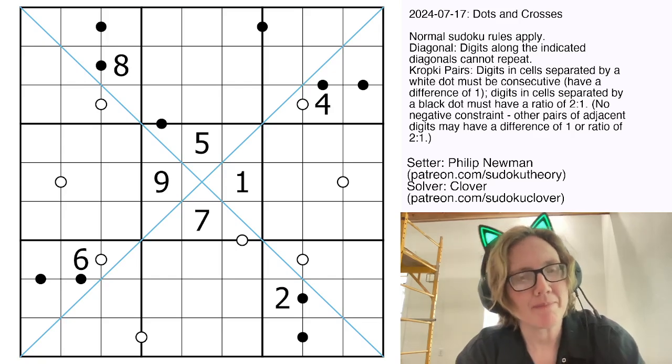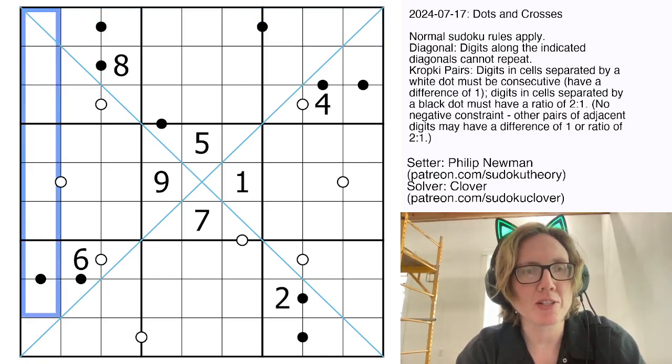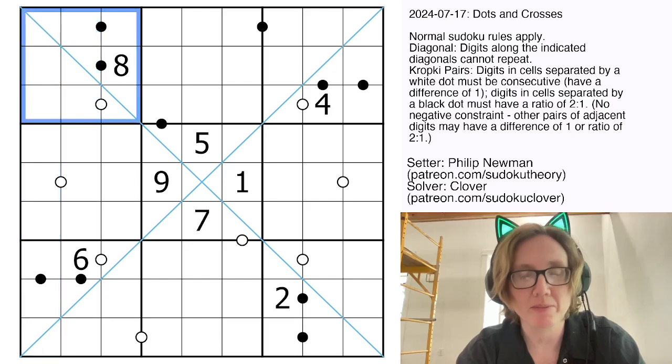and this appears to be a diagonal Kropke-Pairs Sudoku. So what does that mean? First of all, we have normal Sudoku rules, so placing the digits 1 through 9 once each in each row, each column, and each outlined 3x3 region.